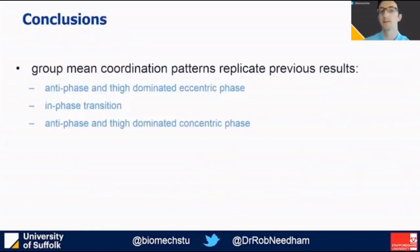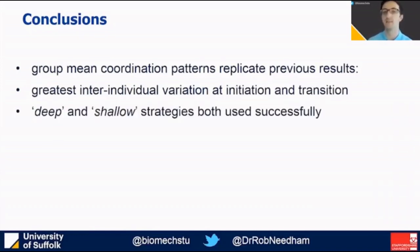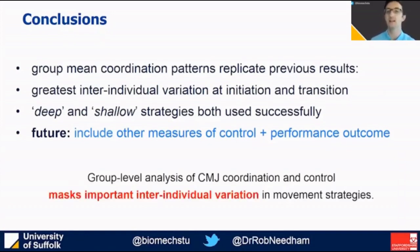To conclude, the group mean coordination patterns did replicate previous results, which included the greater inter-individual variation at movement initiation and transition between phases. We've identified both a deep and a shallow strategy, both of which were used successfully within the cohort. Next steps include the addition of alternative measures of control and exploring the relationship between coordination, control and performance outcome. We conclude that group-level analysis of counter-movement jump coordination and control masks important inter-individual variation in movement strategies.